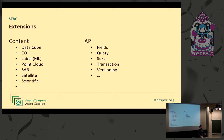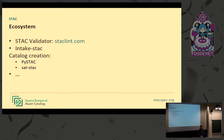On the API side, the core is also very slim and extended via extensions: a fields extension to limit which fields are returned in a response, a query extension for specific filtering, a sort extension, a transaction extension to add, remove, and update items, and a versioning extension for when different versions of assets exist.